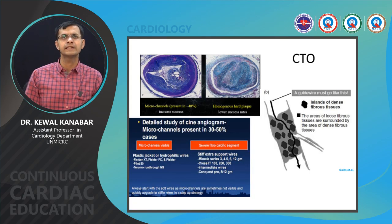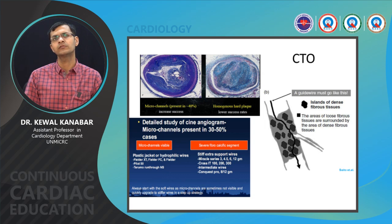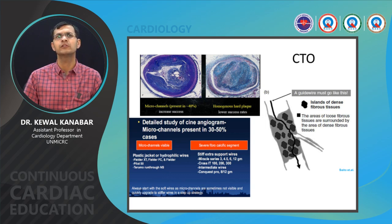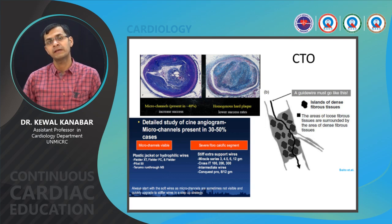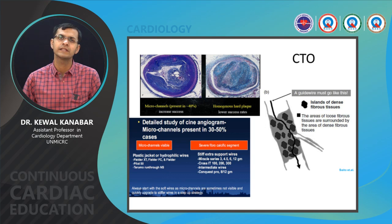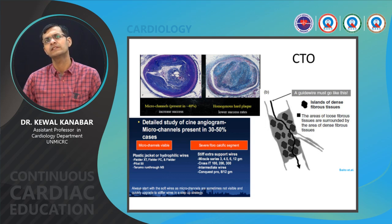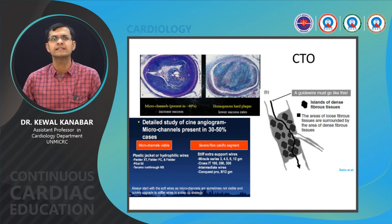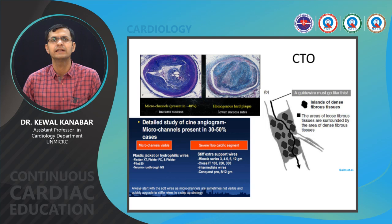Studies on CTOs have shown that micro channels are present in approximately 30 to 50 percent of all CTO patients. While angiograms may not always visualize these micro channels, histological analysis confirms their presence in many cases. Although one may be tempted to start with a high penetration wire like the Gaia or Crossit series, it is always recommended to first give a chance to polymer coated wires. If micro channels are visible, always start with the Fielder series — Fielder FC, Fielder XT, or Fielder XTR — or the Pilot series.